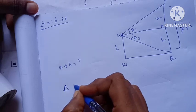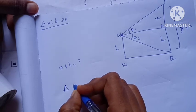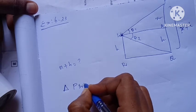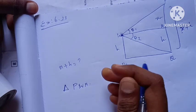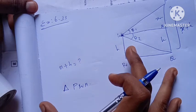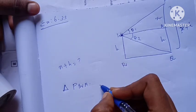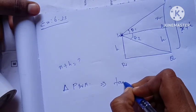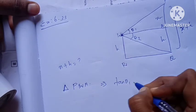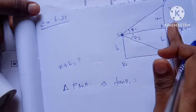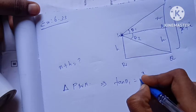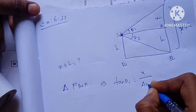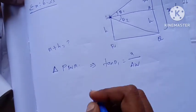Triangle is P, W, E. We have to find the angle. This angle is what we need. The angle is T1, and this angle is T1. Now we have to find A and W. T1 we know.